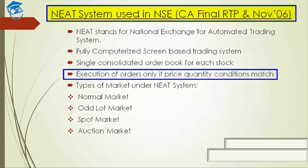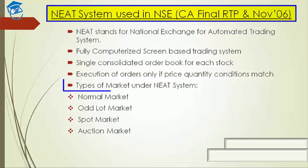The orders are executed only if the price and quantity conditions match. So if I want to sell 1,000 shares for Rs. 50 and you on the other side also want to buy 1,000 shares for Rs. 50, then the execution of the order is done because the price and quantity conditions match. That's what the NEAT system is all about.